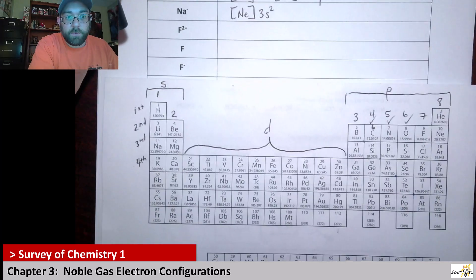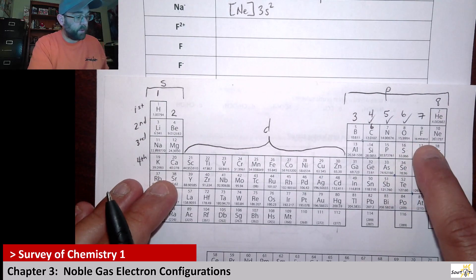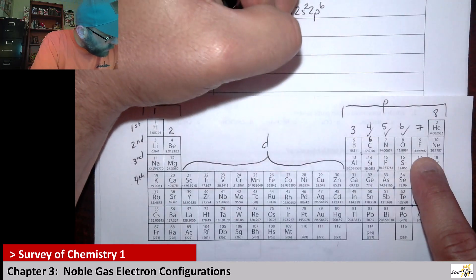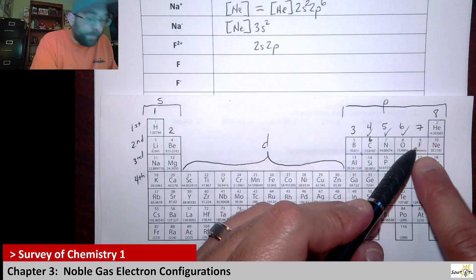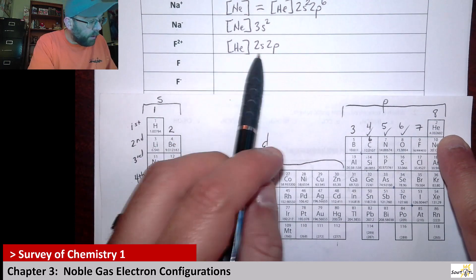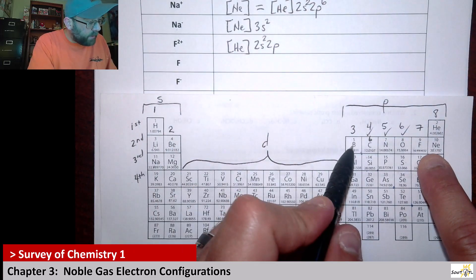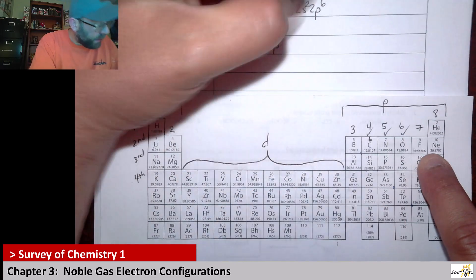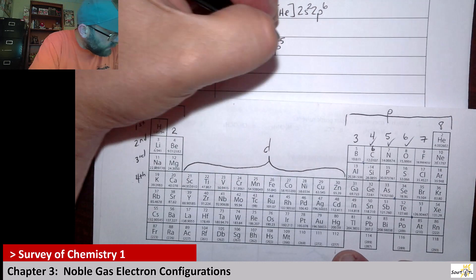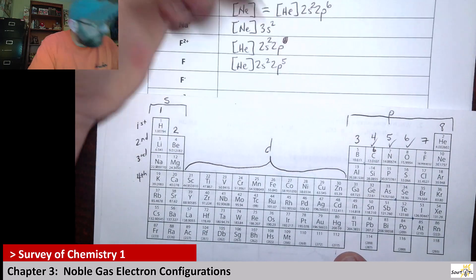Next we have fluorine two plus, fluorine neutral, and fluorine minus. Let's start with neutral fluorine — it's in the second row, so its valence shell has two S and two P electrons. The noble gas before it is helium, so we write helium in brackets. Counting the valence electrons: one, two in the two S, and then one through five gives five P electrons. So neutral fluorine is [He] 2S2 2P5.